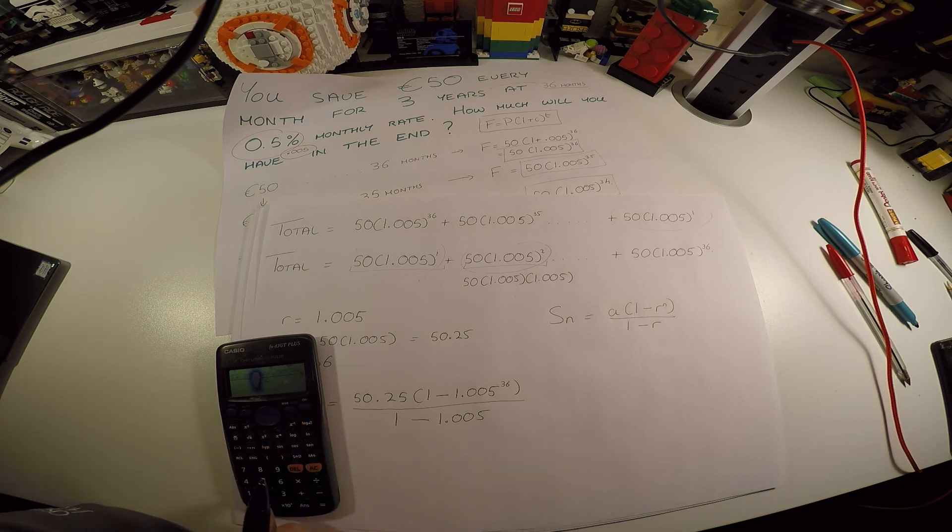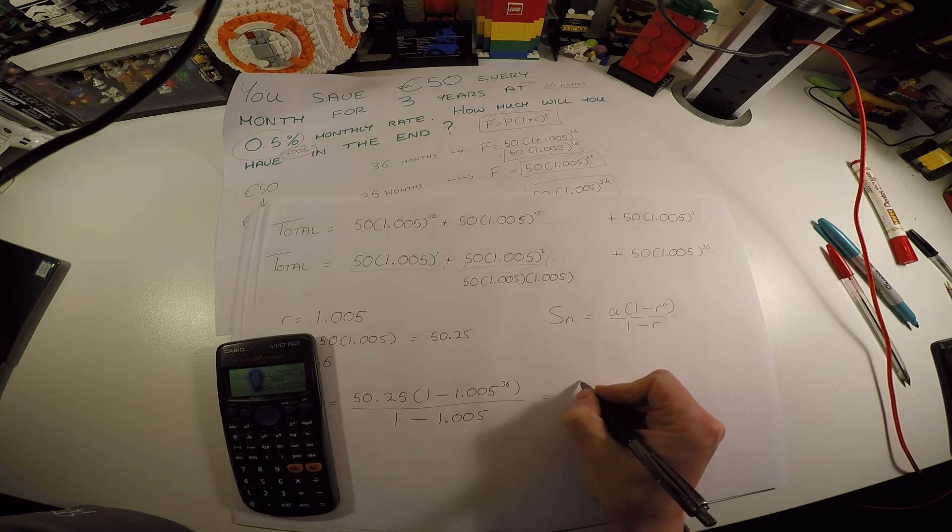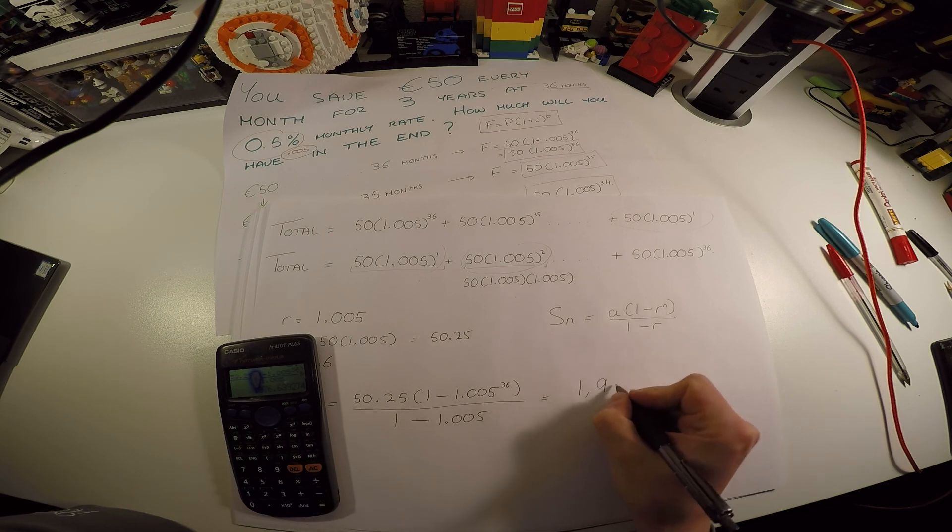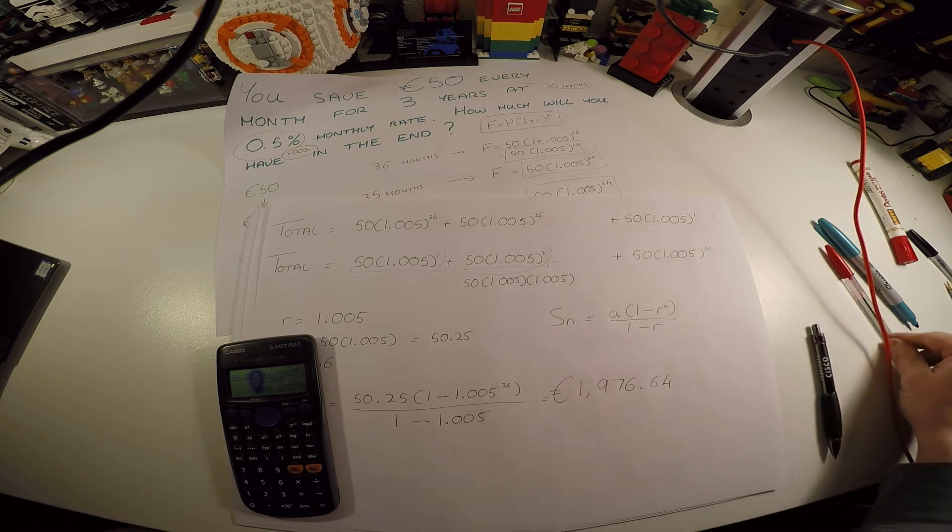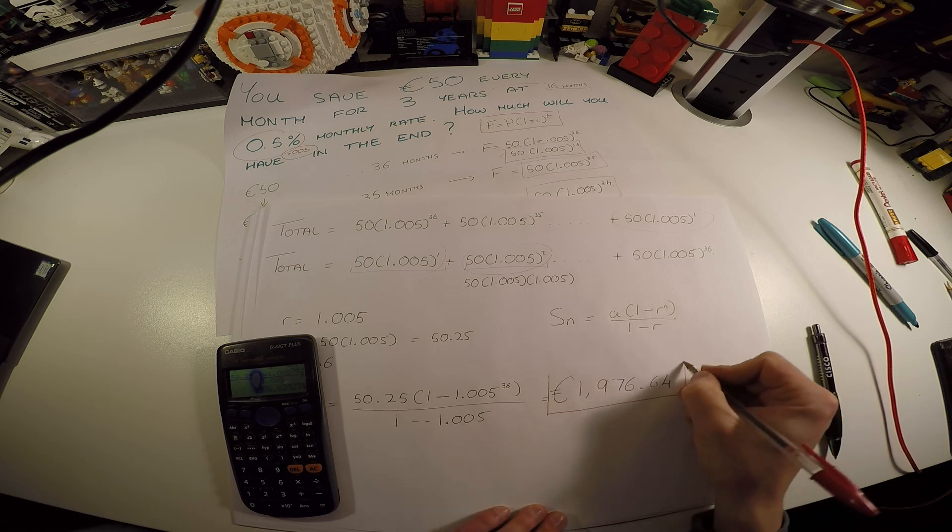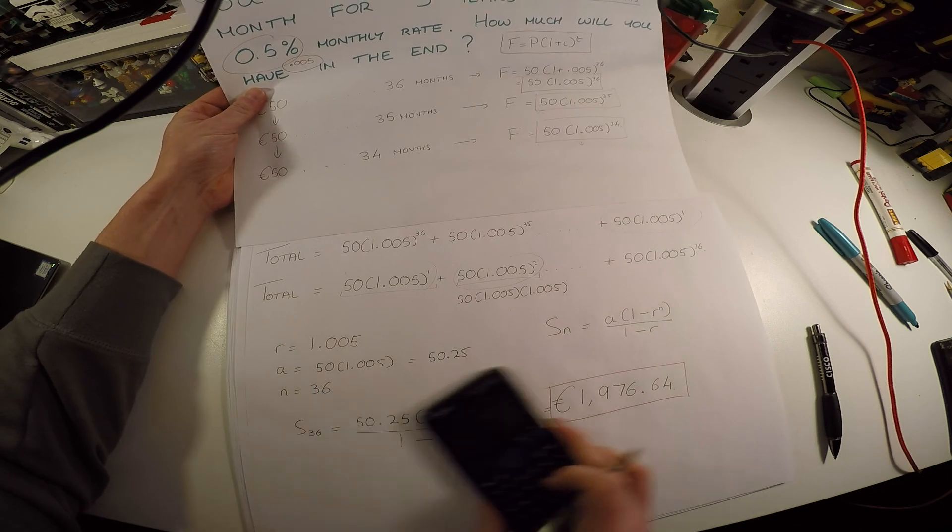So I'll put all this into my calculator: 50.25 times (1 minus 1.005 to the 36) all over (1 minus 1.005), and it gives me a grand total of 1976.264. Remember two decimal places for money. That's it. So that is how a geometric series fits into a simple installment plan.